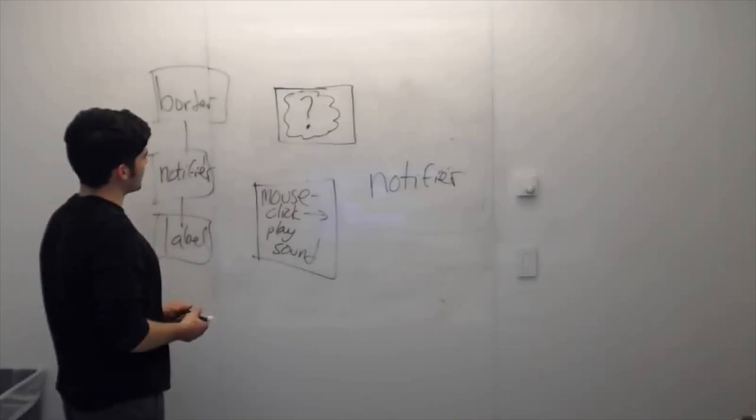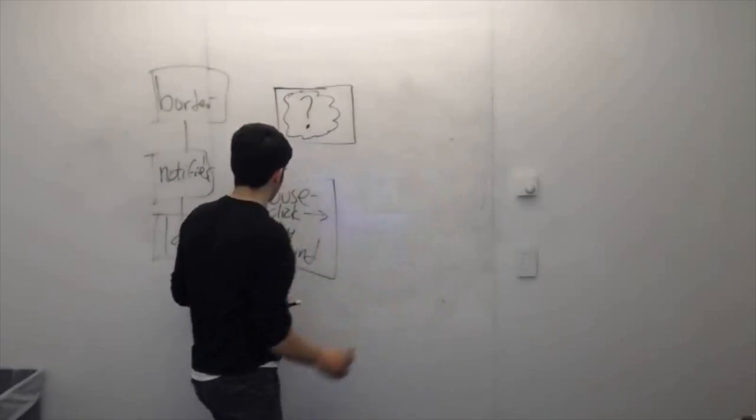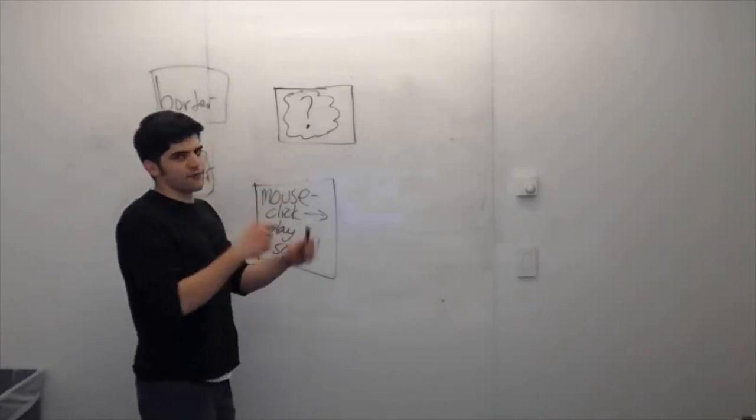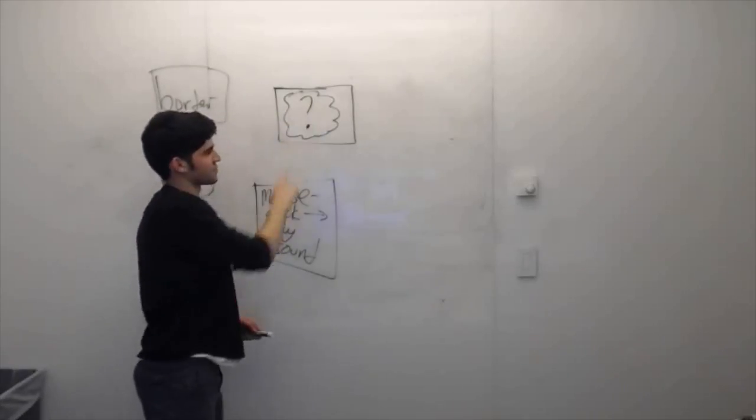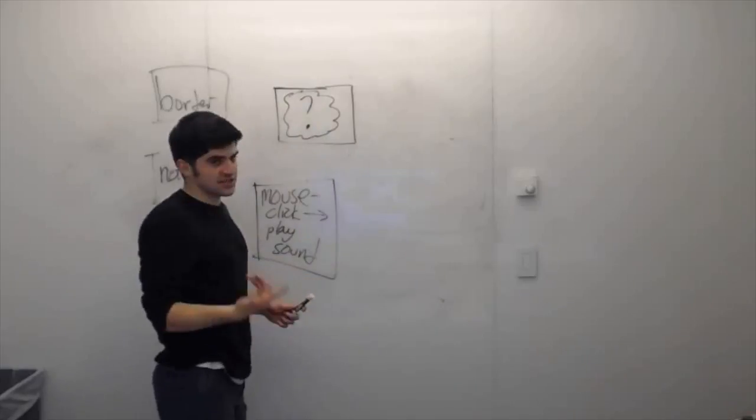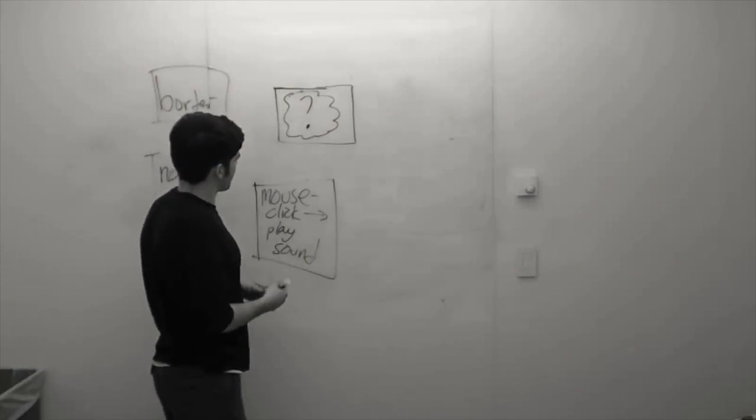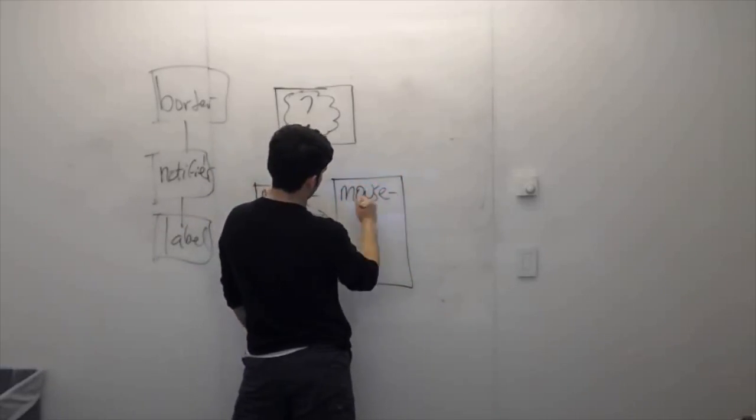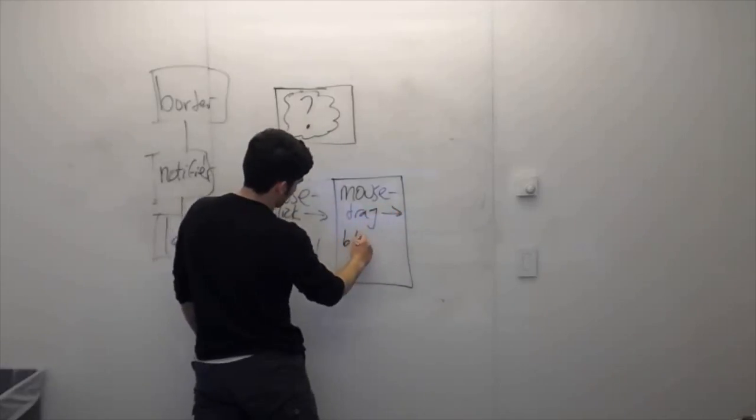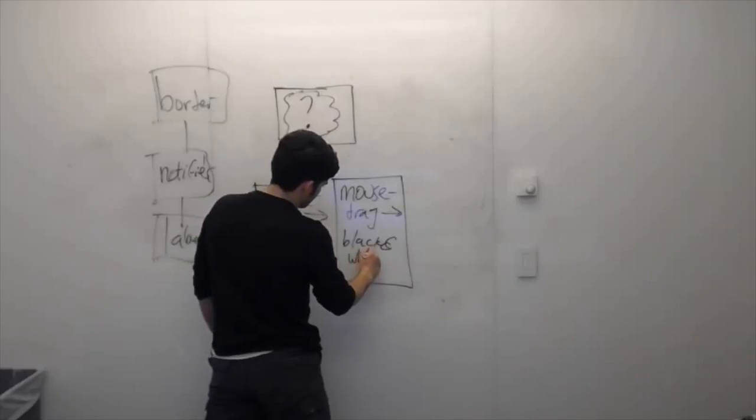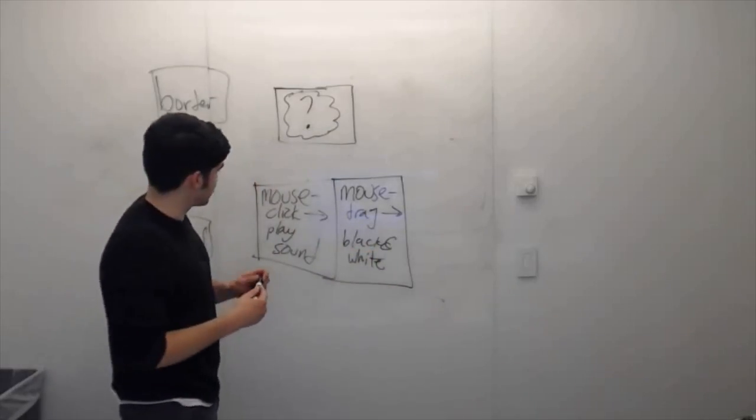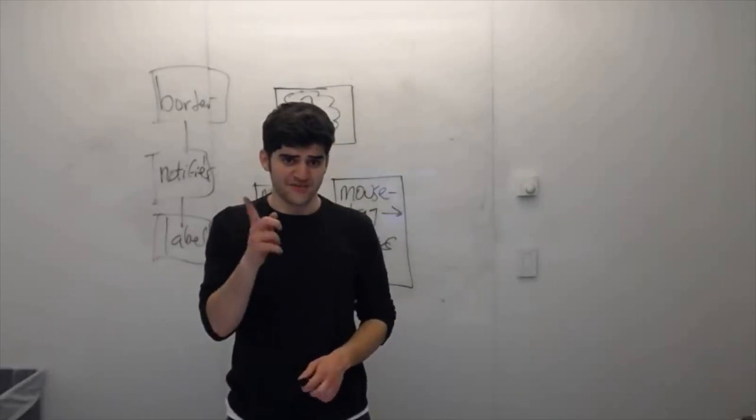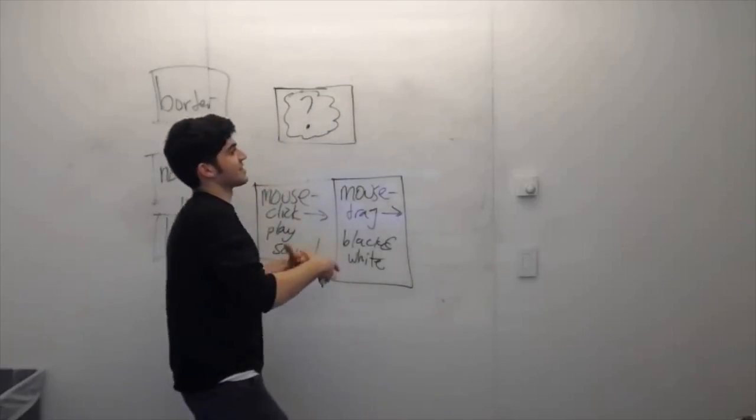But let's say that there's something else going on. Let's say that not only do I want to play a sound when the mouse is clicked, but let's say that I also want to make everything black and white when I drag my mouse across the widget. So when I drag my mouse, this is what happens. So that's another event listener: mouse drag, then black and white. You realize that I didn't have a list of as many event listeners as I wanted. For that reason, the notifier can't just keep track of one event listener in its state and needs to keep track of a list of event listeners.